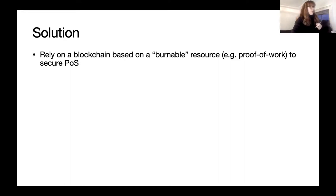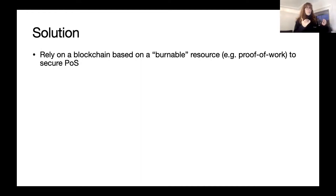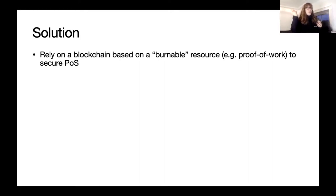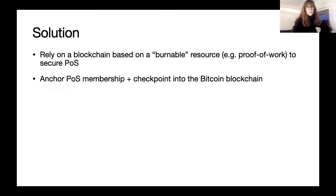The solution consists in relying on a blockchain based on a burnable resource — for example, proof of work — to secure the underlying proof-of-stake blockchain. Proof-of-work blockchains are not vulnerable to these attacks because creating blocks takes time, money, and computation. You cannot just create a chain as long as you want in an instant just because you have some keys. So the idea is to anchor the proof-of-stake membership into the Bitcoin blockchain.